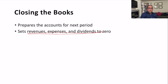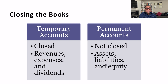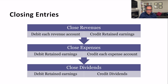We set revenues, expenses, and dividends to zero — that is closing the books. There are two types of accounts: temporary accounts, which are revenue, expense, and dividend accounts; and permanent accounts, which are assets, liabilities, and equity accounts. So assets, liabilities, and equity are permanent accounts, while revenue, expense, and dividends are temporary accounts.